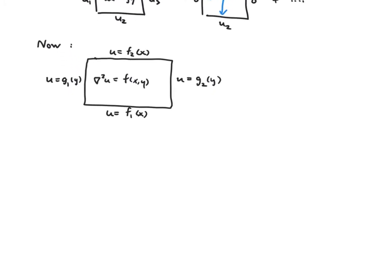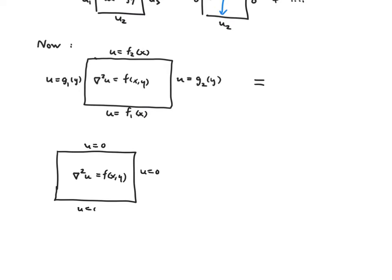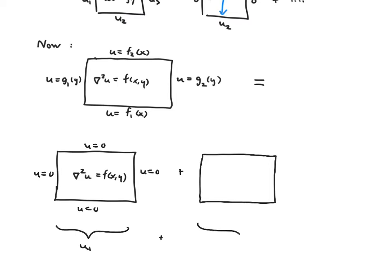We need to somehow deal with all of those. We're going to use the exact same decomposition approach, noting that if I break this up into a sum of two problems — a homogeneous one and a non-homogeneous one — I can simply sum those results together to satisfy my non-homogeneous PDE. What I mean is I'm going to make this equal to a problem on a rectangle with my non-homogeneous PDE, but with all boundaries equal to zero.